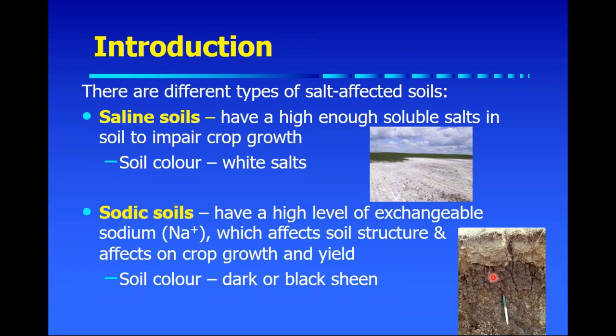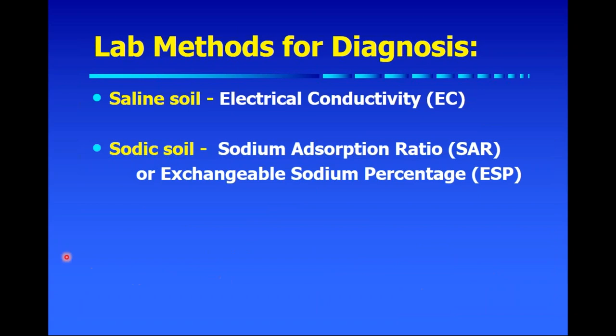We do have different types of salt-affected soils, and one of the best ways to identify them rather than using visual methods — especially when they're not severe — is laboratory analysis. Most soil testing labs will do a measurement called electrical conductivity (EC) to determine if your soil is becoming saline. When you look at your soil test report, you might not see 'electrical conductivity' but you might see an EC rating or number, and that's what you really want to look at.